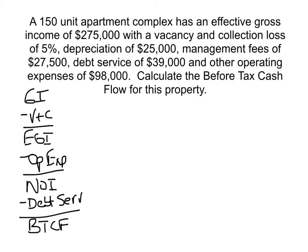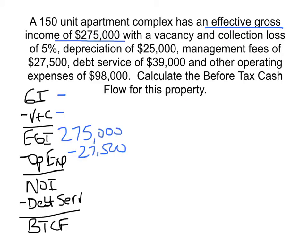In this problem they have given us the effective gross income of $275,000. So we're skipping the gross income and vacancy steps and we can drop down to effective gross income. Again, this is one of the number one distractors in these types of problems. Next, we back out the management fee of $27,500 and the allowable operating expenses of $98,000.